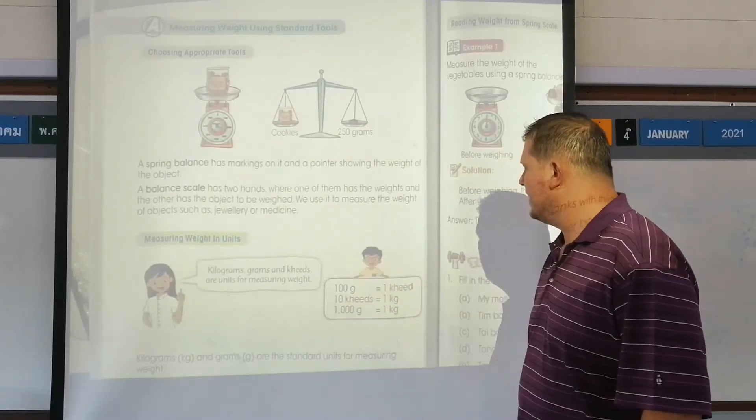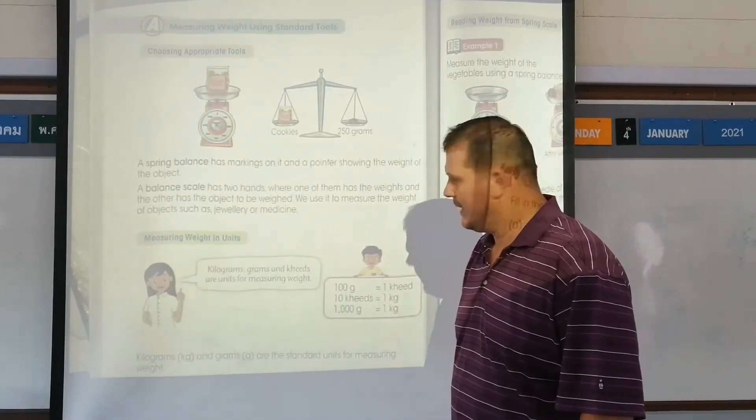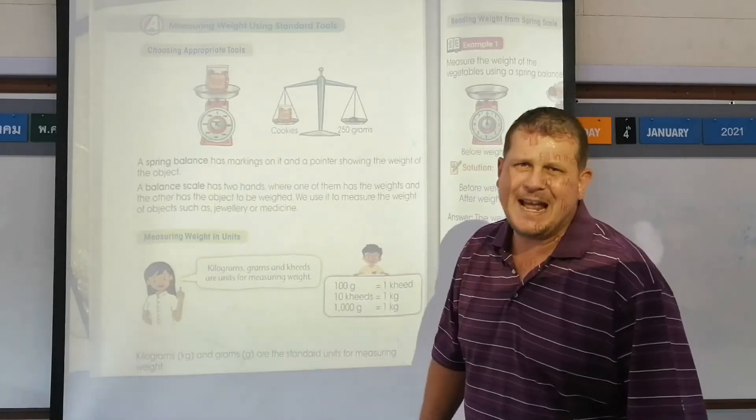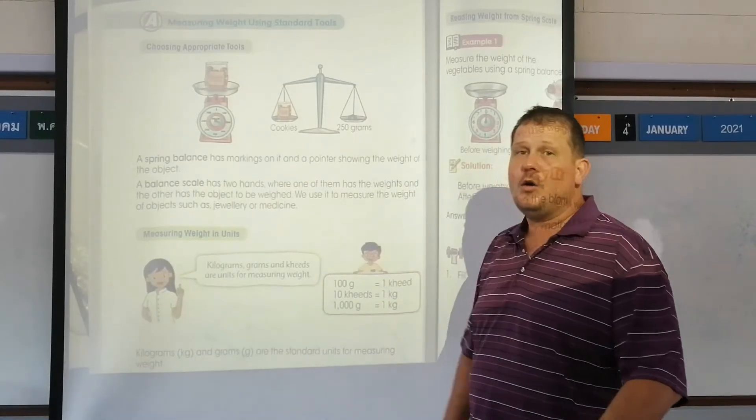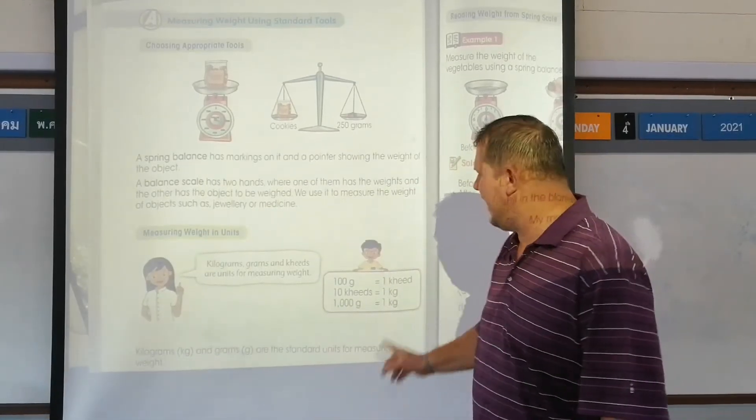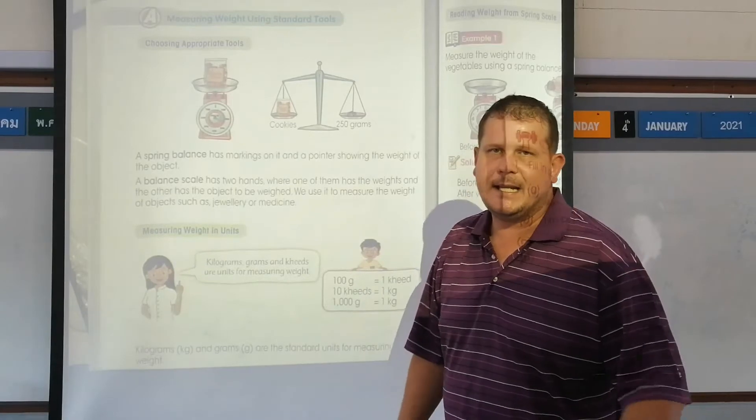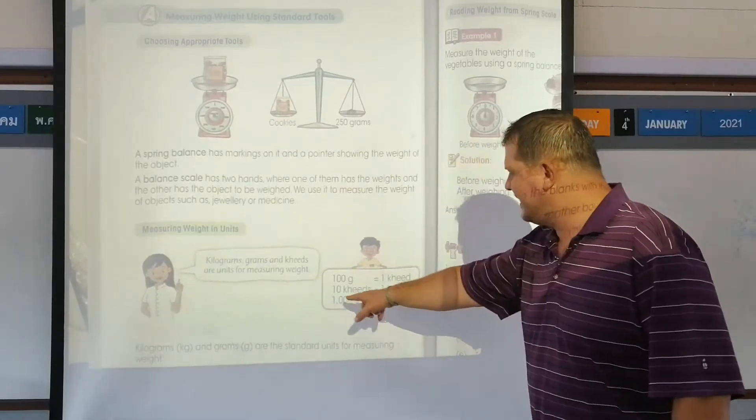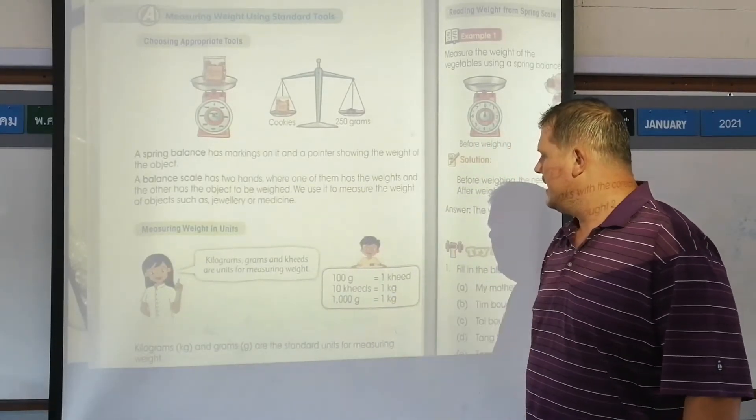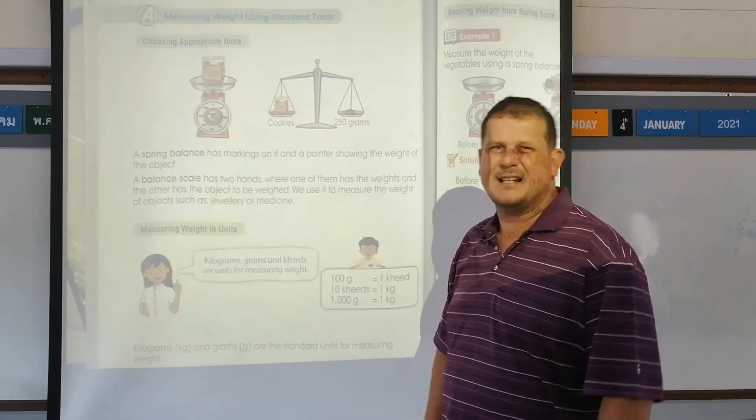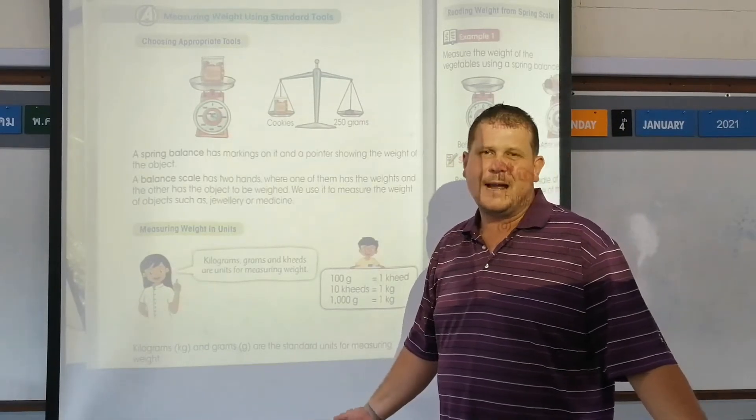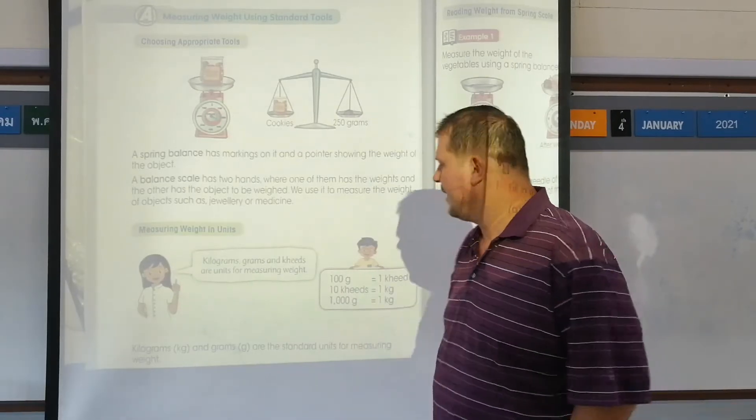10 kids is one kilogram, so if someone asks you how much it weighs and they tell you 10 kids, it means it weighs one kilogram. Or if you tell them it weighs one kilogram, it's the same as 10 kids. And a thousand grams is one kilogram, but it's easier to say one kilogram, it means the same.